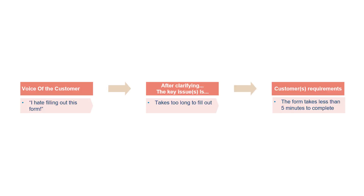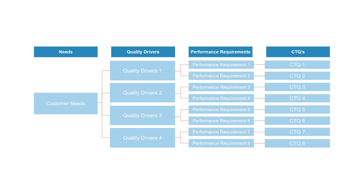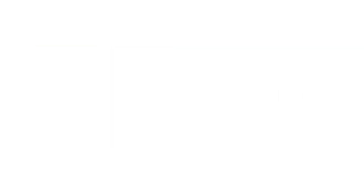This is of course a very simplistic example, but I hope that it helps demonstrate and provide a better understanding of what I mean by translating the voice of the customer from something vague and qualitative to something measurable and quantitative. Now let's get to the method. To go through this process, we usually apply what is known as the critical to quality tree.